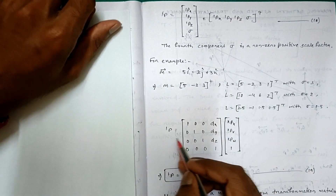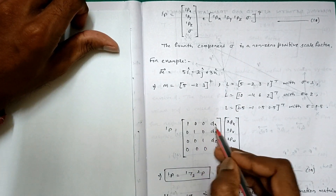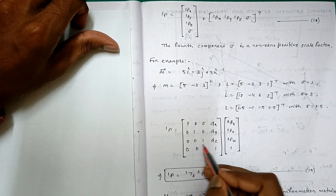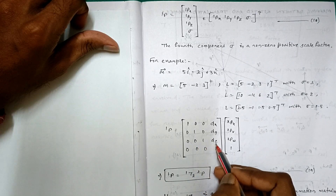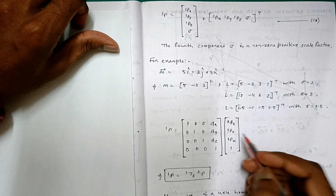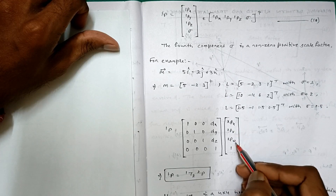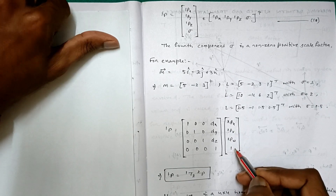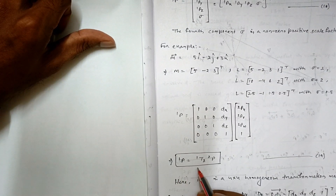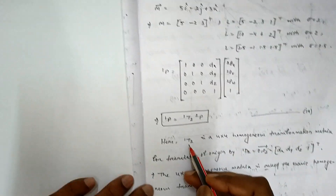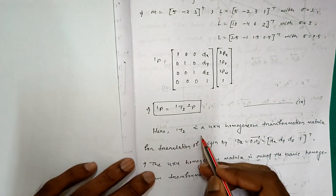So 1p equals the 4×4 matrix with rows [1, 0, 0, dx], [0, 1, 0, dy], [0, 0, 1, dz], [0, 0, 0, 1], multiplied by the column vector [2pu, 2pv, 2pw, 1]. Therefore 1p = 1T2 · 2p. This is the final equation.